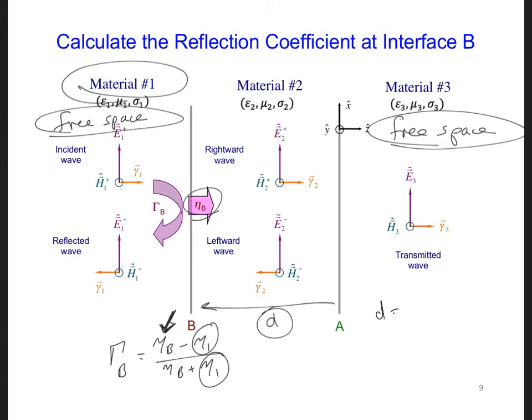In other words, what do we want D to be equal to so that eta B is equal to eta 1? In that case, so that we get no reflection, which you can see from this equation. You can pause the video for the moment if you like.